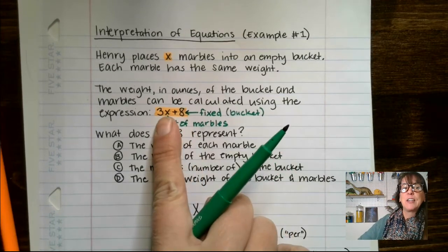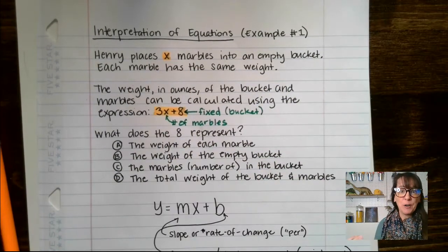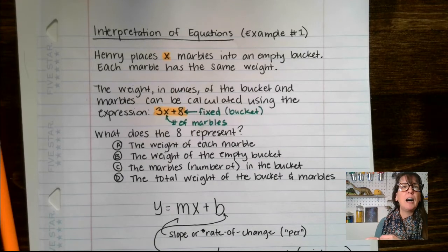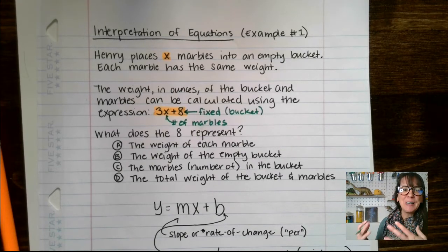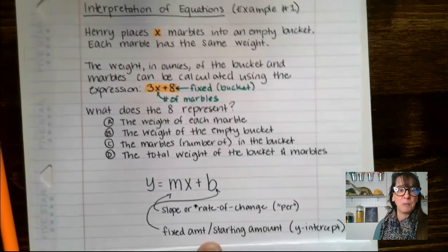So if we wanted to use the word per here, it is three ounces per marble. And so that would be our rate.